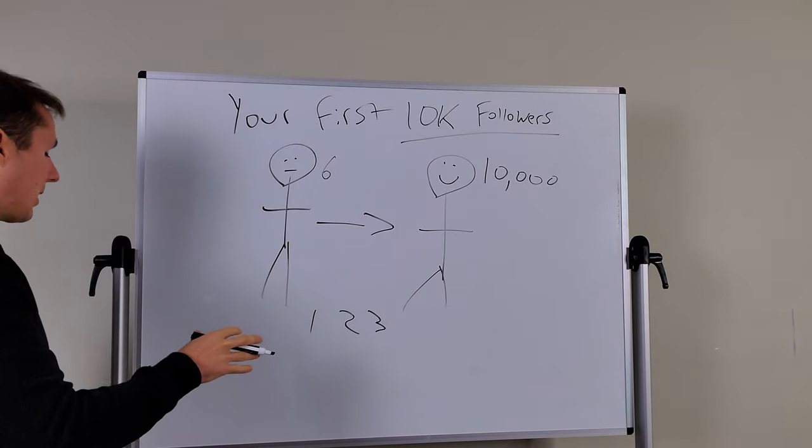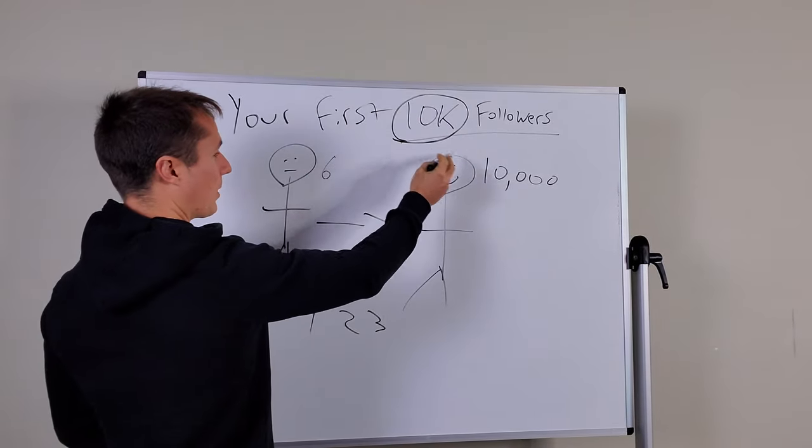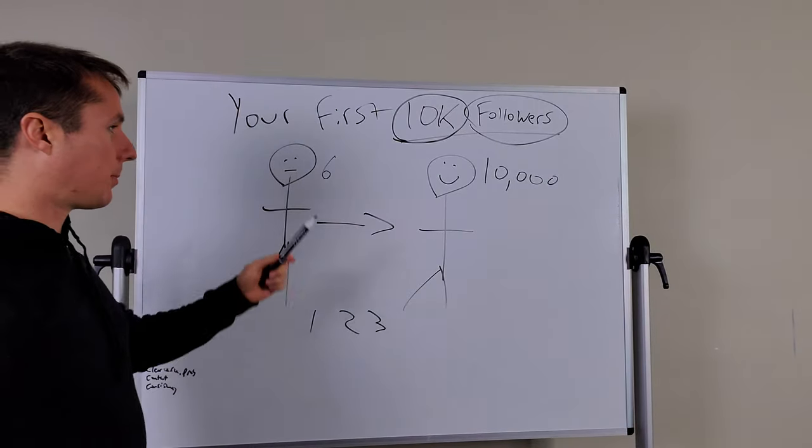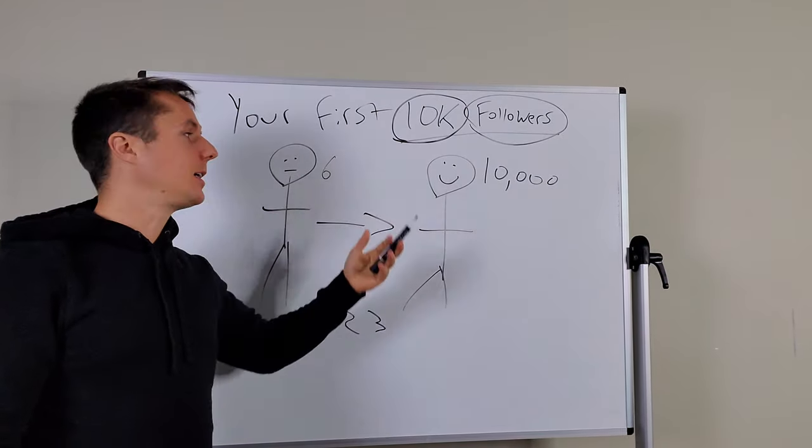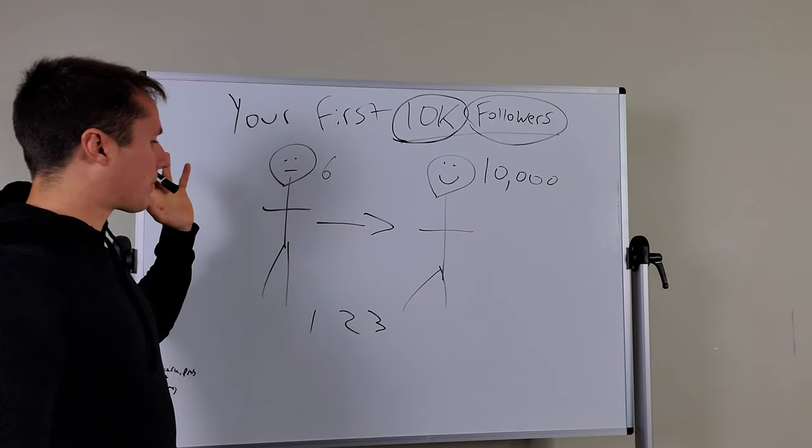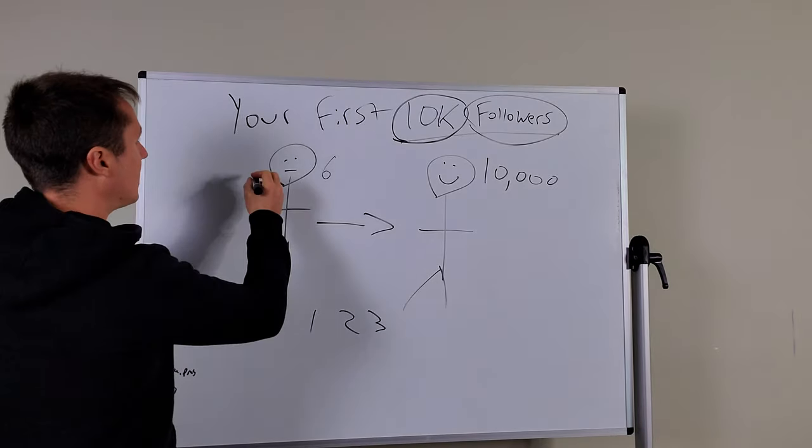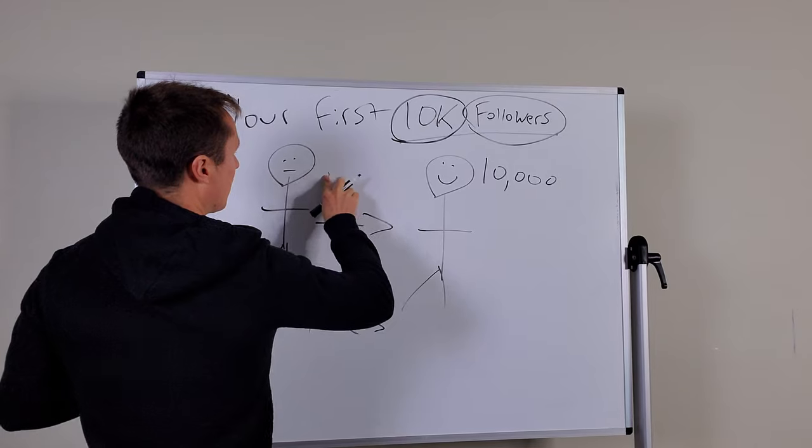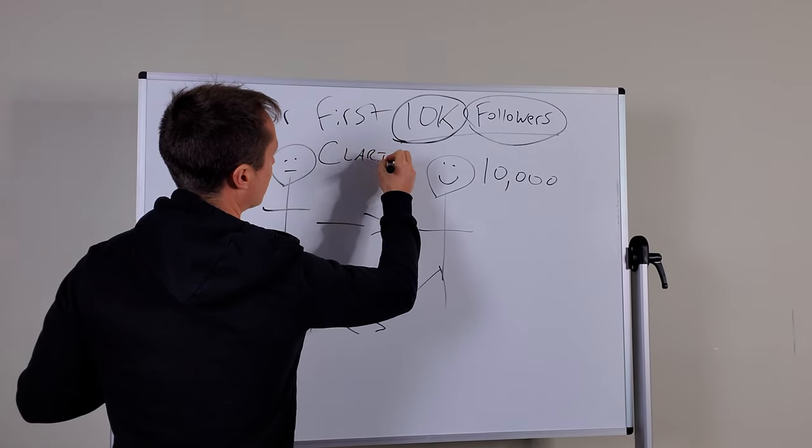So the first thing you got to do is you got to niche yourself up. You need to get specific about what kind of followers you want. Like what kind of 10,000 followers do you want here? Are they going to be moms? Are they going to be dads? Are they going to be kids under 18? Are they going to be entrepreneurs? Like who is your target audience? Get crystal clear on that niche.